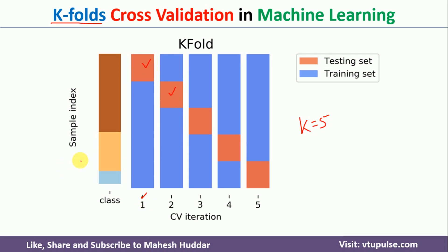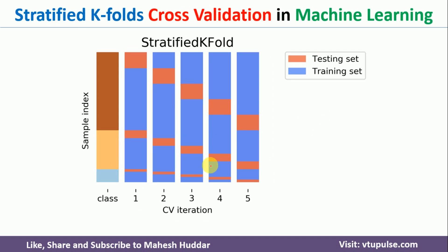But k-fold cross-validation has some disadvantages. Consider the class distribution of the data — in this dataset we have three classes. Looking at the 5 iterations, in the first iteration the testing fold comes from only the third class, and in the second iteration it again comes from that class. In the last iteration it comes from the first and second class. So in each iteration we are not taking equal representation of each class. Because of that, the model may again go into an overfitting state. To avoid this, we use stratified k-fold cross-validation.